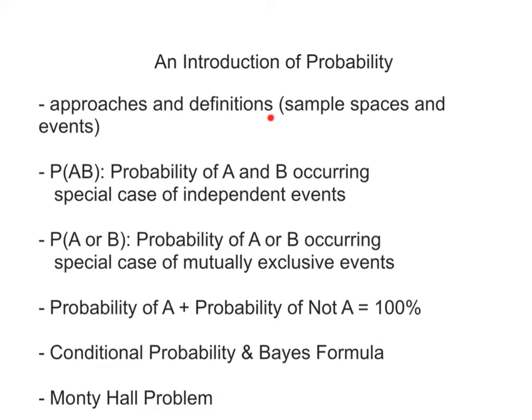The topics we will cover are approaches and definitions including sample space and events, the probability of event A and B both occurring, and we'll look at the special case of independent events, the probability of event A or event B occurring, and we'll look at the special case of mutually exclusive events, this formula where the probability of A occurring plus the probability of A not occurring equals 100%, conditional probability with a quick introduction to Bayes' formula, and finally the Monty Hall problem.